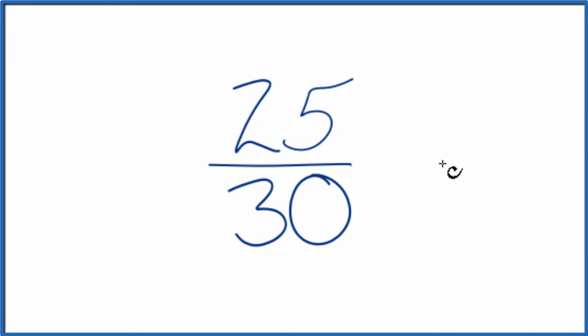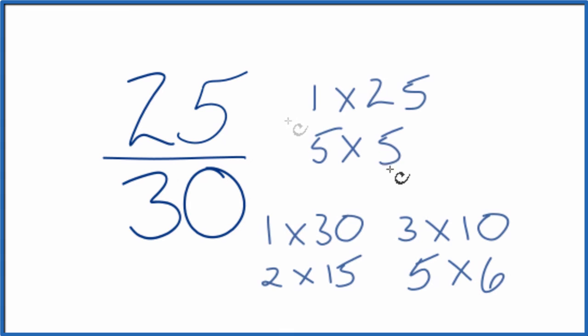And to do that, we need to find a common factor, something that goes into 25 and 30. So here are the factors for 25 and 30. I'm looking for the greatest common factor for 25 and 30. And it looks like the greatest common factor is going to be five.